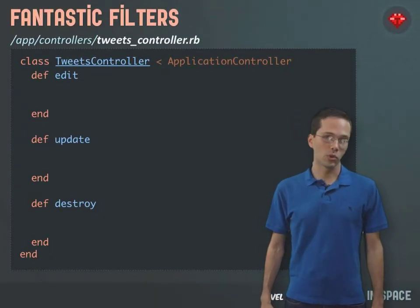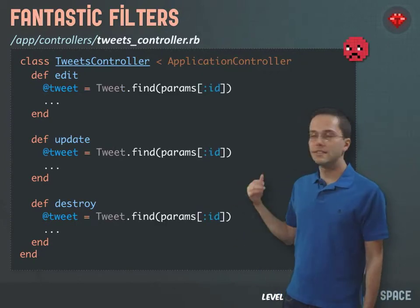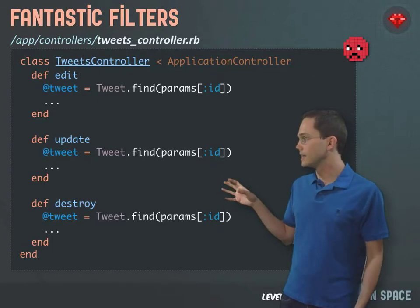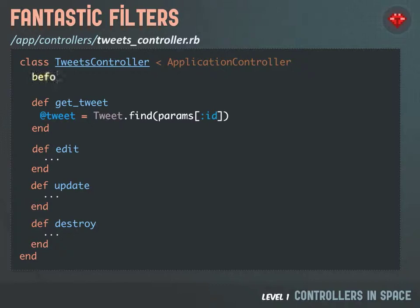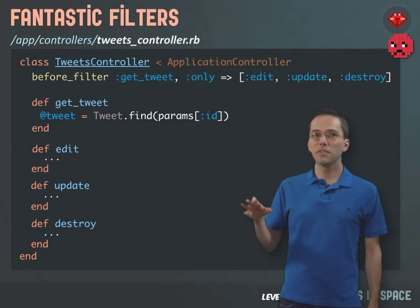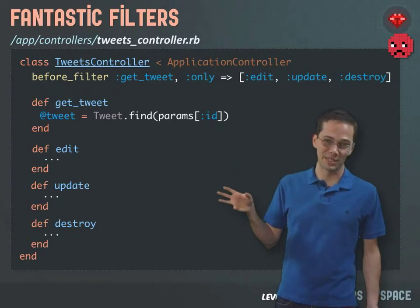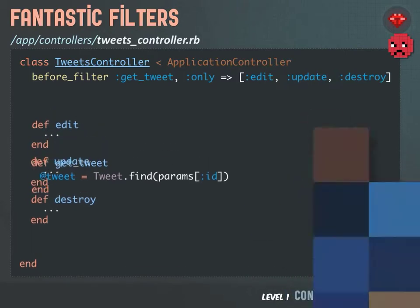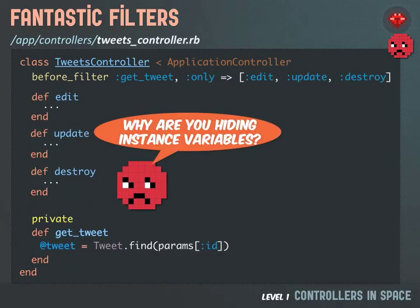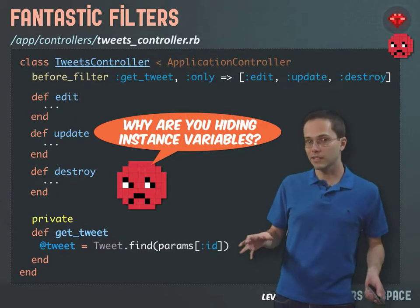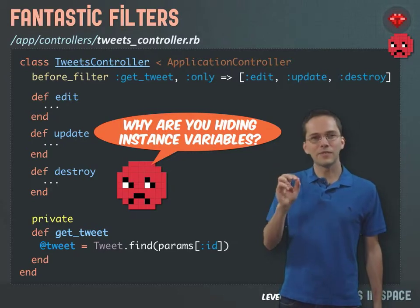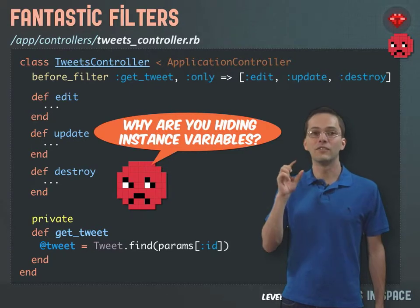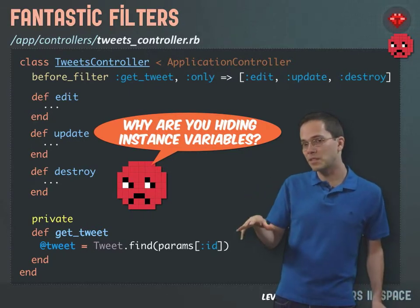Next up, we're going to be talking about controller filters. In Rails for Zombies, we had an example where tweet.find(params[:id]) was happening in a bunch of different actions, and we moved that up into its own method called getTweet, then specified a before_filter for that method, specifying it should only happen on the edit, update, and destroy actions. There are a couple things wrong about this that aren't a best practice. First, that getTweet method should probably be in a private section of our controller, down at the bottom. Another reason people don't think this is a best practice is because it's hiding instance variables — some people have the idea that instance variables should only be declared inside of your actions, never hidden in some private methods at the bottom of your file.